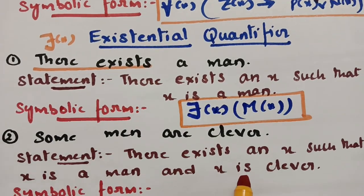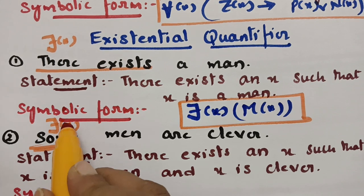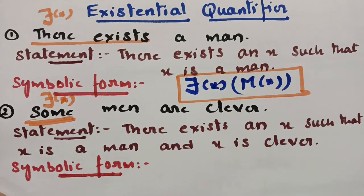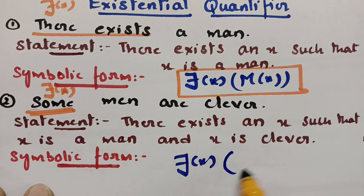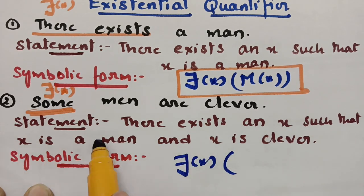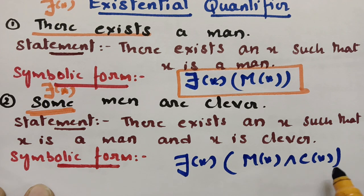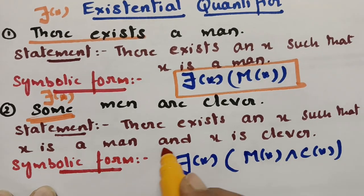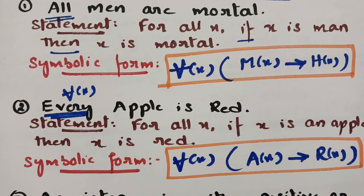The next example is 'Some men are clever.' Only some are there — if a sentence has 'some' or 'few', we use the existential quantifier. The statement becomes: there exists an x such that x is a man and x is clever. Symbolically: ∃x, M(x) ∧ C(x), where M(x) is man and C(x) is clever. For existential quantifier we use the AND symbol.